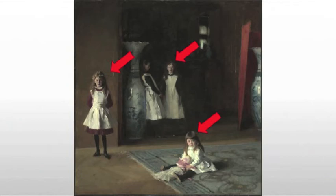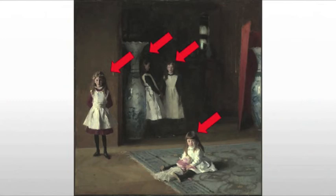Then we have the oldest, maybe twelve, thirteen, who leans against the vase and definitely doesn't want to be there. In the 21st century, she'd probably be on her smartphone as the painting goes on. He captures the developing self-consciousness of the girls as they age.